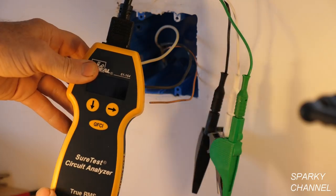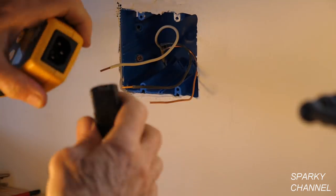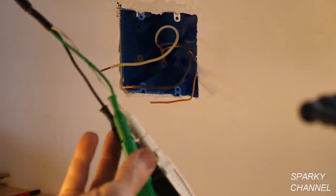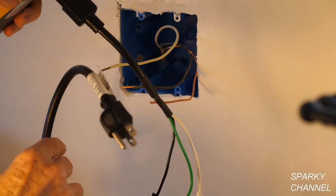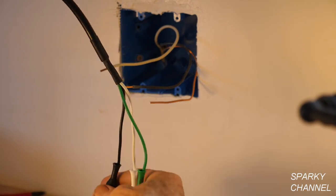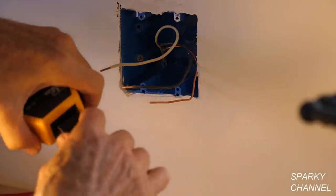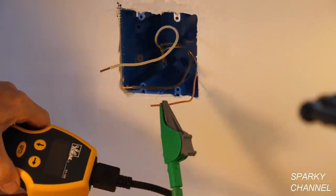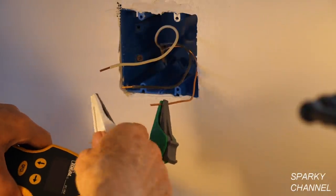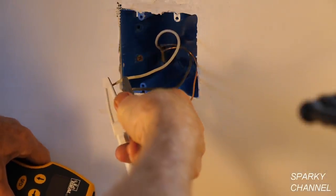I'm going to use my SureTest circuit analyzer. You see I have this end plugged into it. I have another end that plugs into a receptacle, or you have this end that plugs into just the wires. You just plug it in to the top of your SureTest, and you put the green on the ground, and the white on the neutral, and the black on the black.